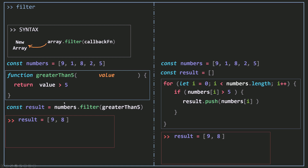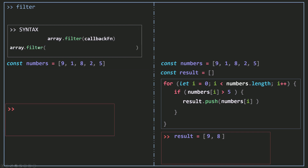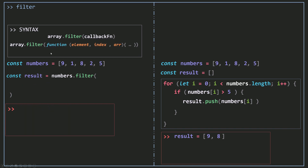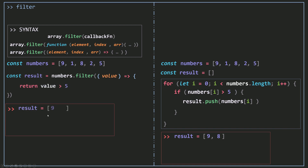If you don't want to create a separate named function, you can use an inline anonymous function. So you call filter and right away use your anonymous function. The first parameter is the value, and you return the condition: value greater than five. This will filter the numbers that are greater than five. You can also use an arrow function instead of an ordinary function — the first parameter is the value, and you return value greater than five, getting the same results.